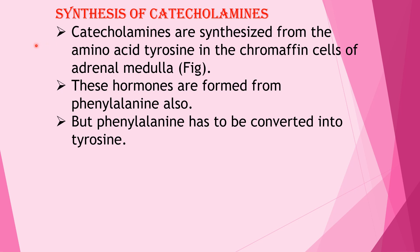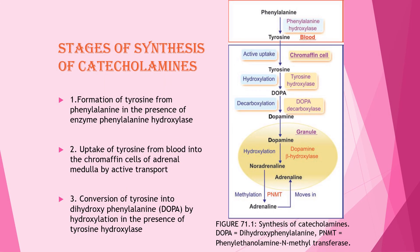Catecholamines are synthesized from the amino acid tyrosine in the chromaffin cells of the adrenal medulla. They can also be formed from phenylalanine, but phenylalanine must first be converted into tyrosine. The stages of synthesis are: first, formation of tyrosine from phenylalanine in the presence of phenylalanine hydroxylase; second, uptake of tyrosine from the blood into chromaffin cells by active transport; third, conversion of tyrosine into DOPA (dihydroxyphenylalanine) by hydroxylation in the presence of tyrosine hydroxylase.